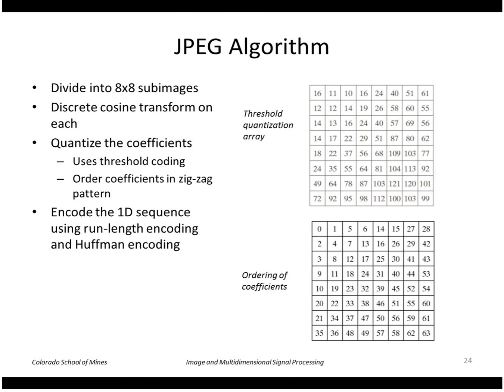I think we're ready to look at the complete JPEG algorithm. It kind of puts all these pieces together. So the JPEG algorithm divides the image into eight by eight sub-images, applies a DCT on each sub-image, quantizes the coefficients using threshold coding, orders them in that zigzag pattern, and then takes the resulting sequence and encodes that using run length encoding and Huffman coding.